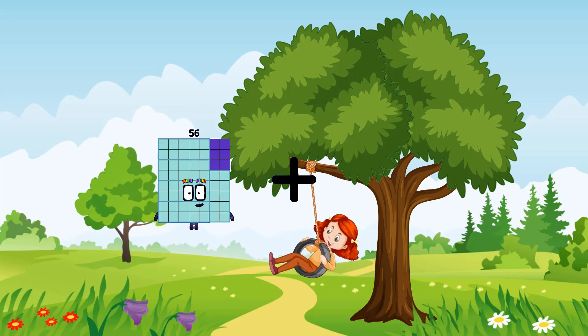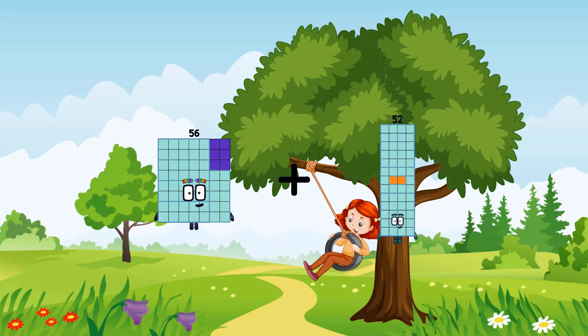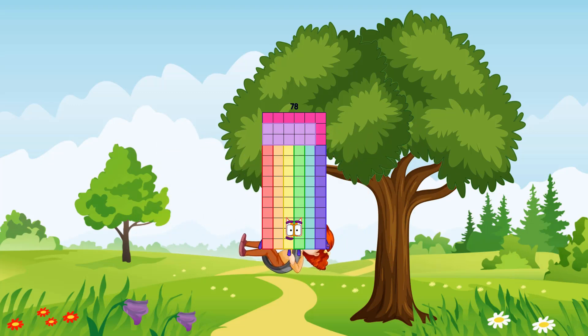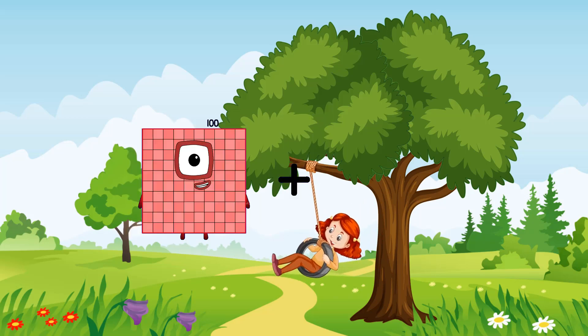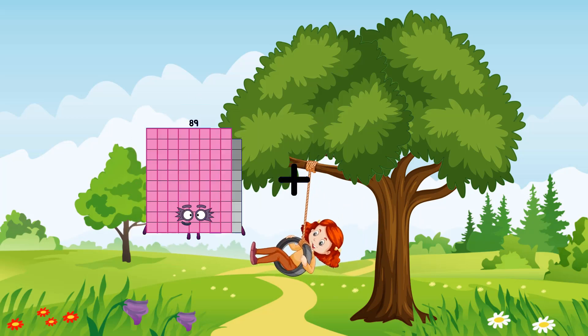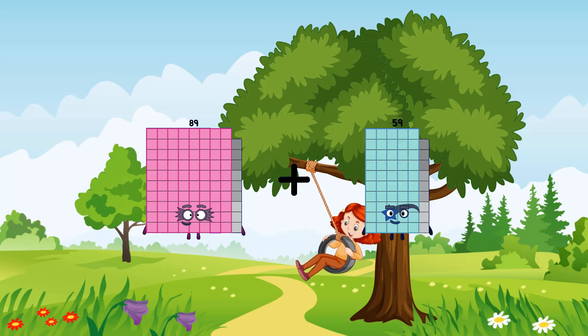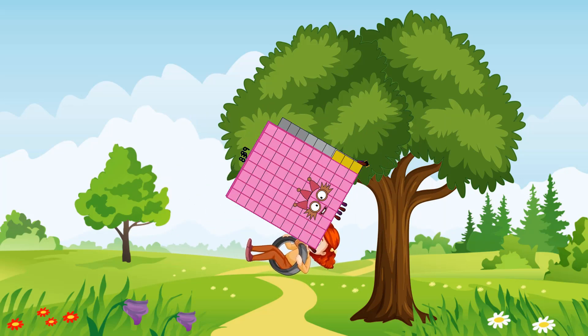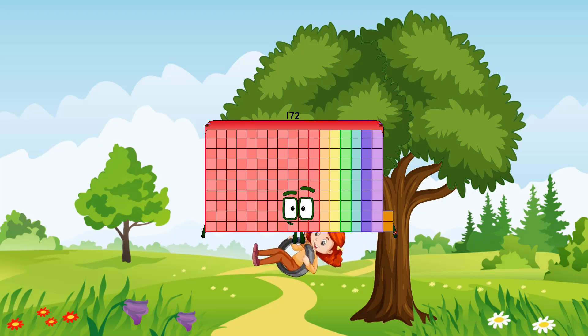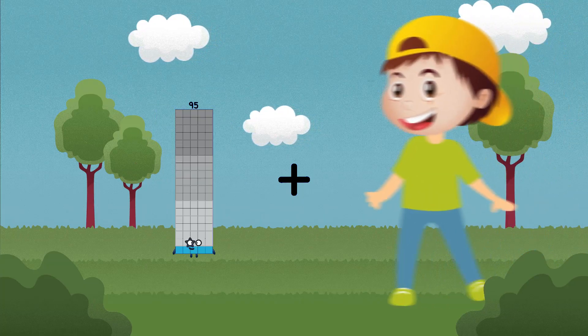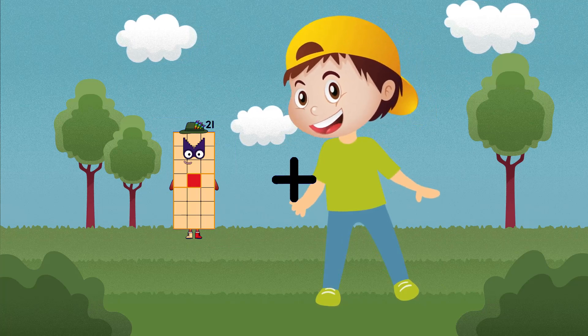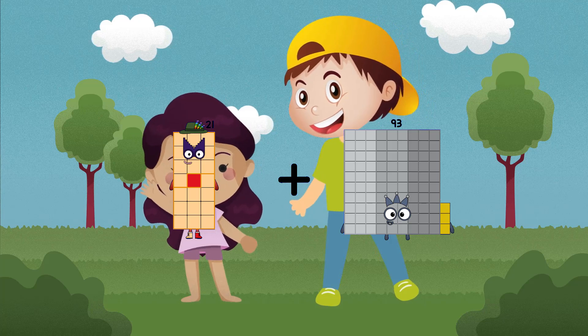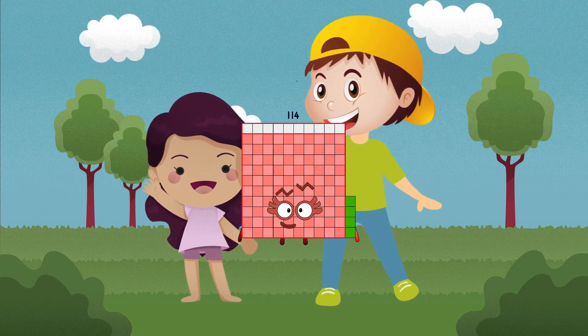56 plus 22 equals 78. 89 plus 83 equals 172. 21 plus 93 equals 114.